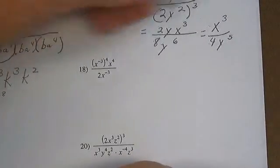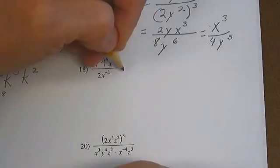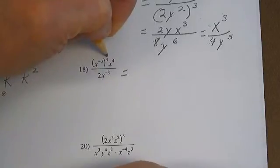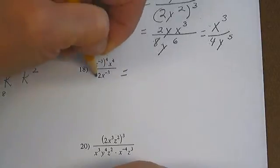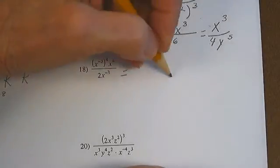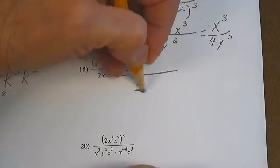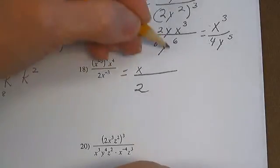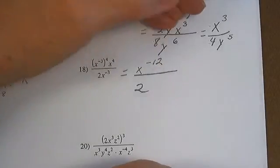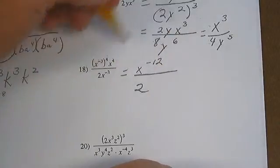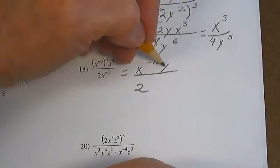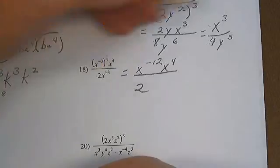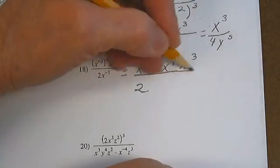Problem 18: x to the negative 3 to the power of 4, times x to the 4th, over 2x to the negative 3. The 2 is going to stay in the denominator. X to the negative 3 to the 4th power is going to be x to the negative 12 times x to the 4th. And then we have this x to the negative 3, which becomes x cubed in the numerator.